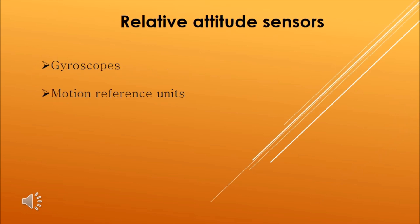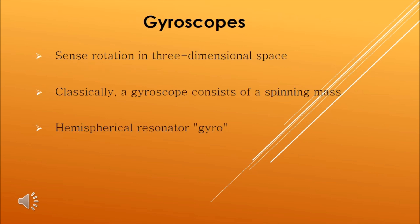Relative attitude sensors are of two types: gyroscope and motion reference units. Gyroscopes are devices that sense rotation in three-dimensional space without reliance on the observation of external objects. Classically, a gyroscope consists of a spinning mass, but there are also laser gyros utilizing coherent light reflected around a closed path. Another type is a hemispherical resonator gyroscope, where a crystal cup shaped like a wine glass can be driven into oscillations.